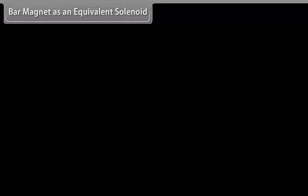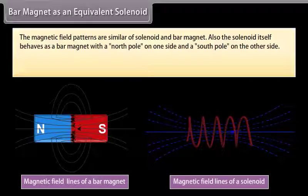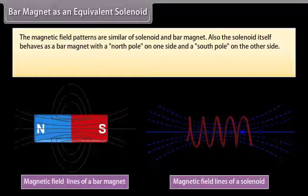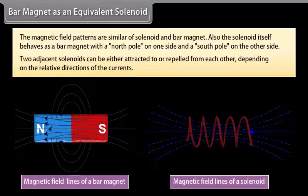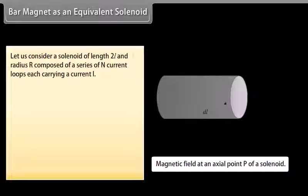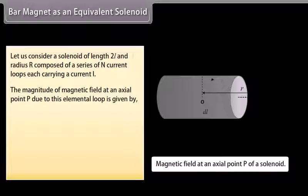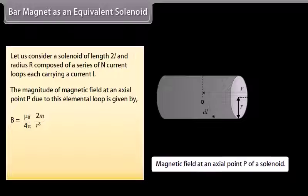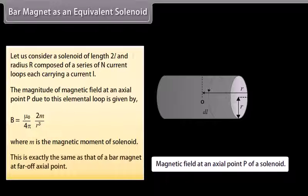Bar magnet as an equivalent solenoid: The magnetic field patterns of a solenoid and a bar magnet are similar. The solenoid itself behaves as a bar magnet with a north pole on one side and a south pole on the other. Two adjacent solenoids can either attract or repel each other depending on the relative directions of the currents. For a solenoid of length 2L and radius R composed of N current loops each carrying current I, the magnitude of the magnetic field at an axial point P is given by mu0 over 4pi multiplied by 2m over R³, where m is the magnetic moment. This is exactly the same as that of a bar magnet at a far-off axial point.